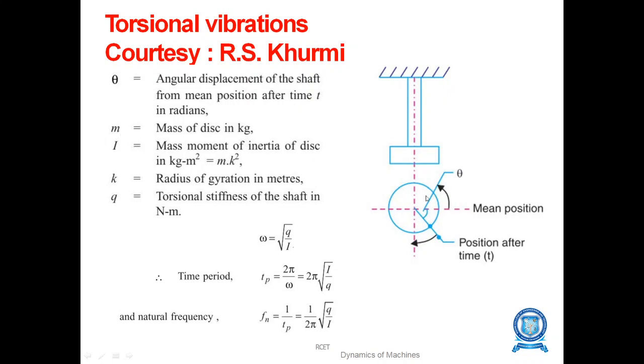M is the mass of this disc. I is the mass moment of inertia to calculate I, M into K square. Here, K is the radius of gyration in meters, and Q is the torsional stiffness of the shaft in newton meter.